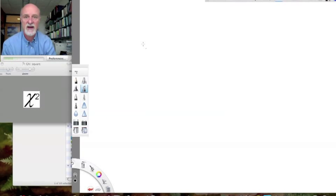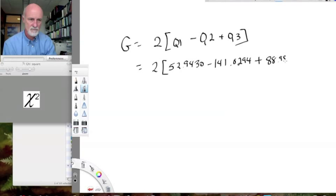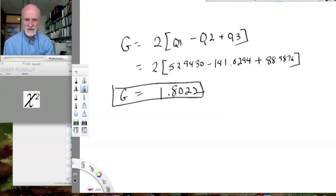Now, how do we get our g value or our log likelihood? G equals 2 times quantity 1 minus quantity 2 plus quantity 3. So, we have 2 times 52.9430 minus 141.0294. It might seem like I'm carrying a lot of digits here, but you actually can need those sometimes, plus quantity 3, 88.9876. Which equals exactly 1.8022. So, our g value is 1.8022.